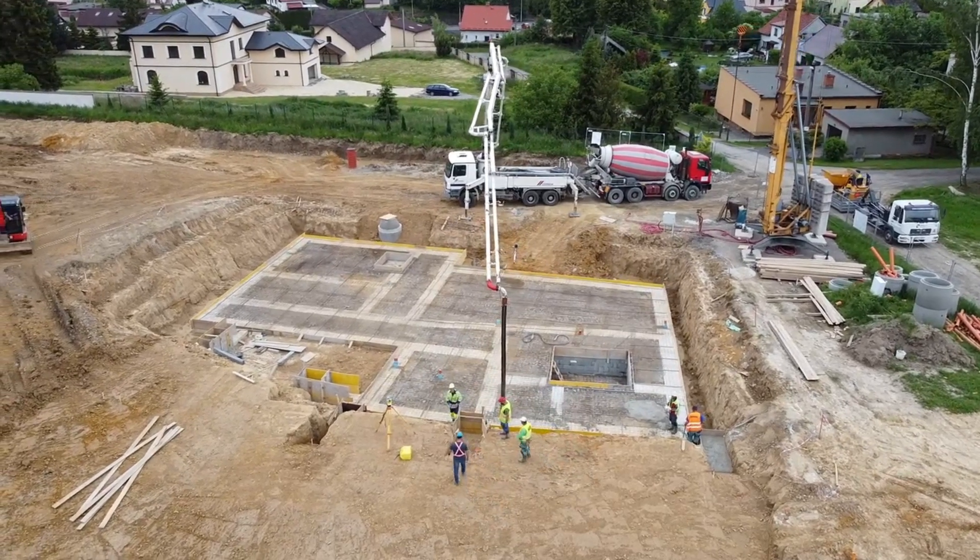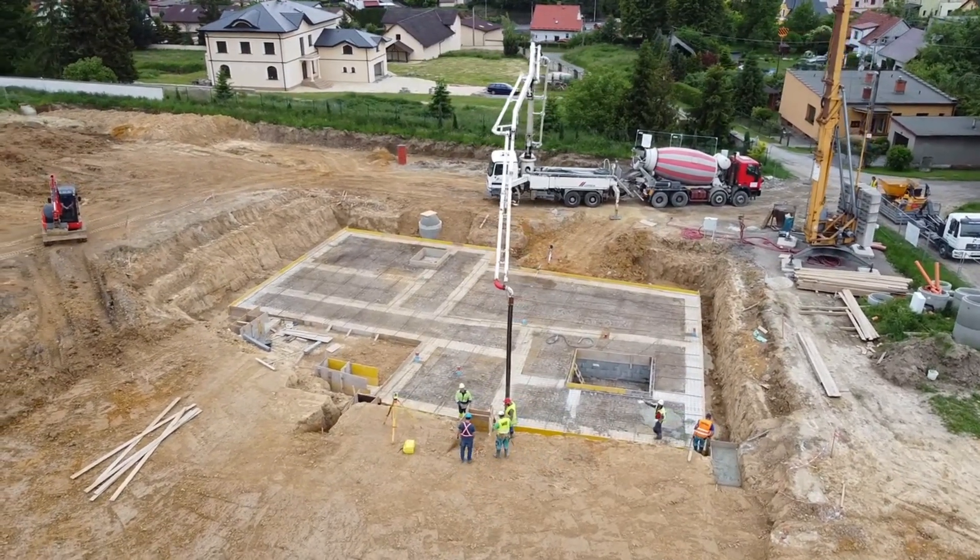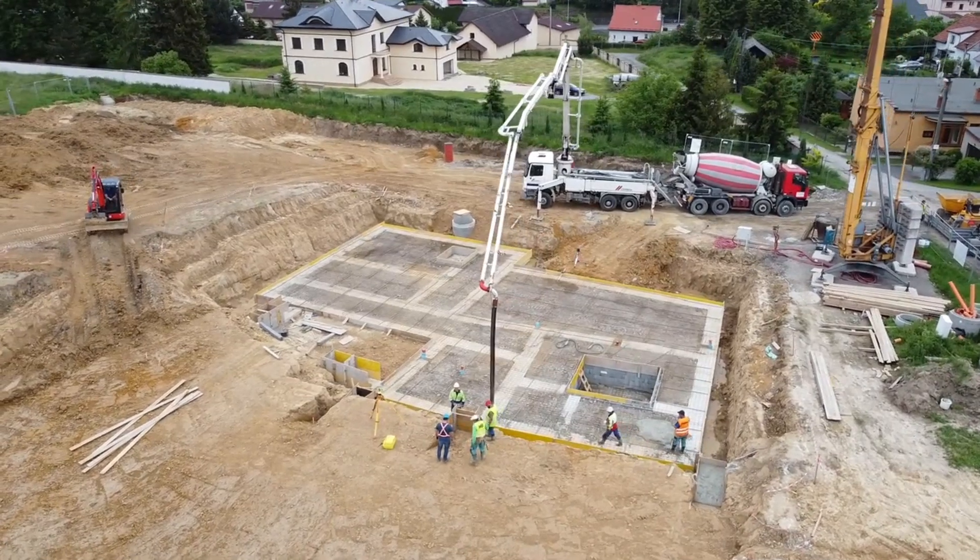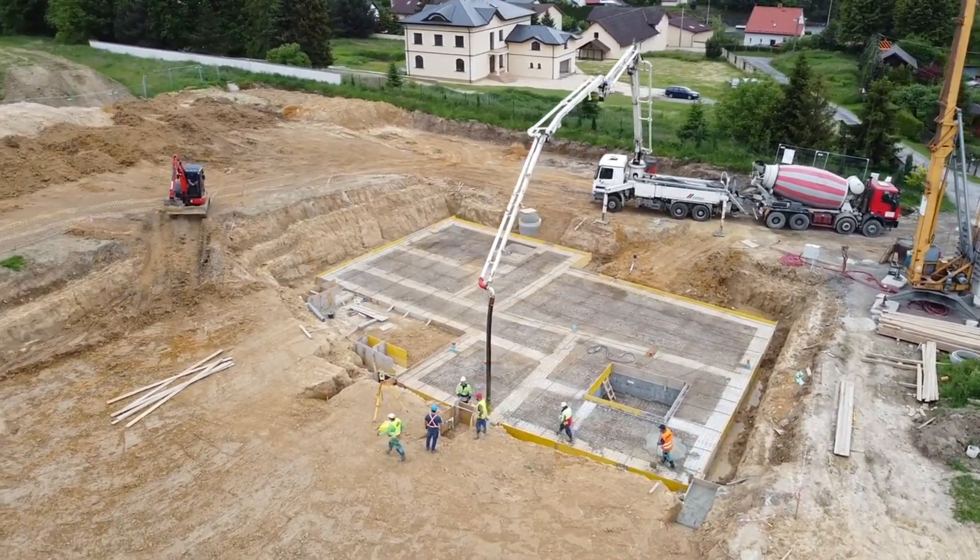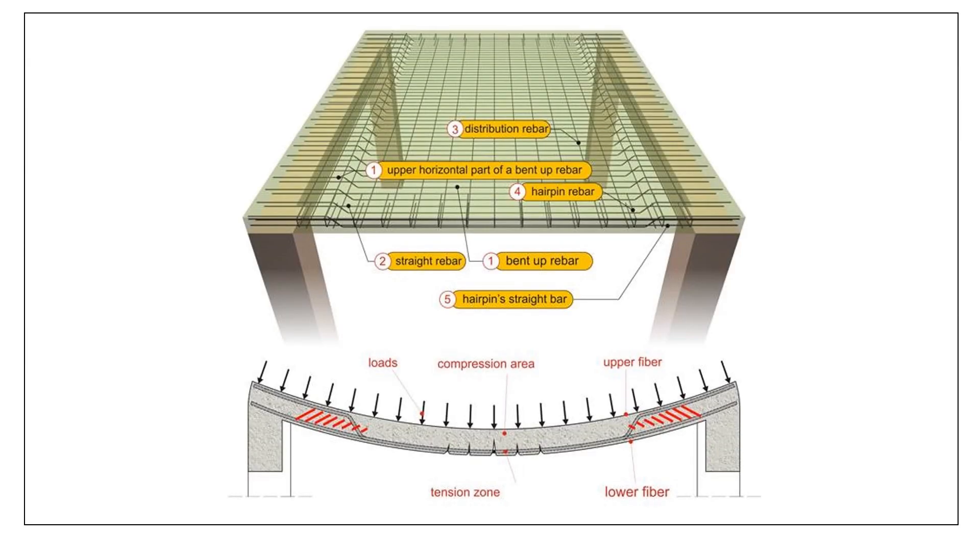A one-way slab is one of the major classifications of slabs in building construction based on flexural behavior. These are slabs that transfer a major portion of the incoming loads in one way and have an aspect ratio greater than two.